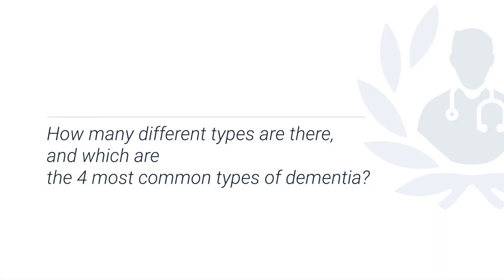All of these can serve as pointers towards a problem that is slowly developing. There are about 150 types of dementia identified, and there are probably more than that, but the four common types are Alzheimer's dementia, vascular dementia, Lewy body dementia, and alcohol-related brain damage.